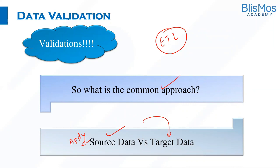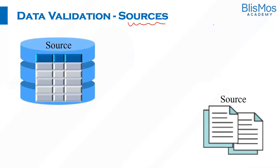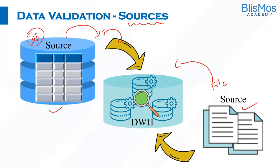When we talk about sources, data is extracted from different sources. We don't extract data from only one type of data source — it can be a file, it can be a database. We extract data from different types of sources, transform it, and load it. So the question is: will the validation approach be the same whether the source is a database or a file? Not really — the validation approach would differ.